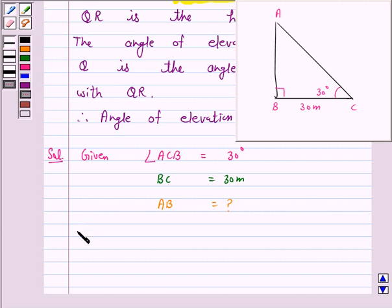So, in right triangle ABC, we have AB upon BC is equal to tan 30 degrees.